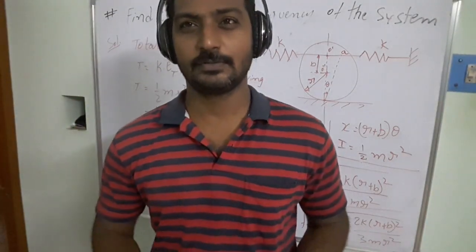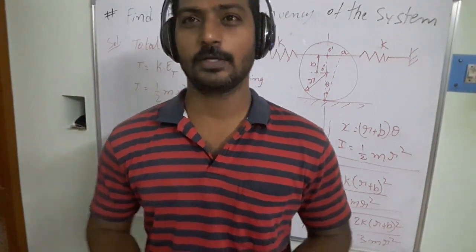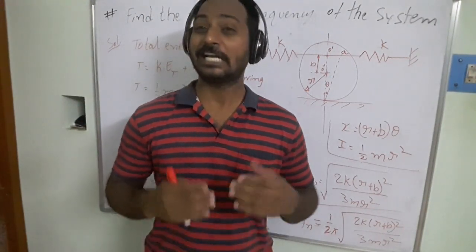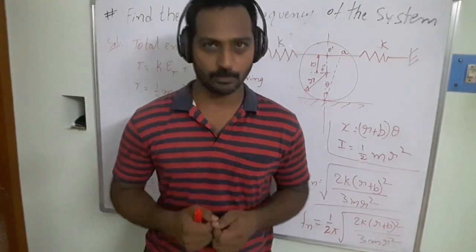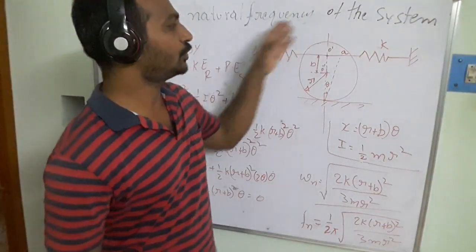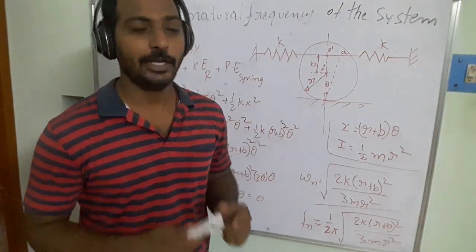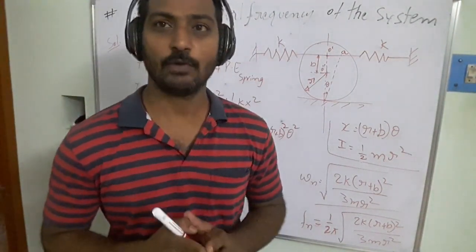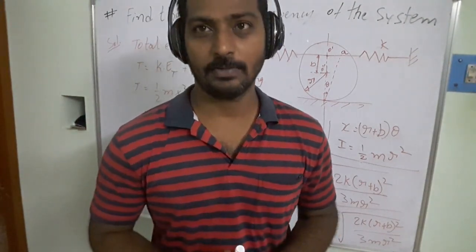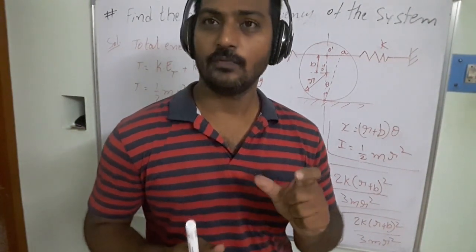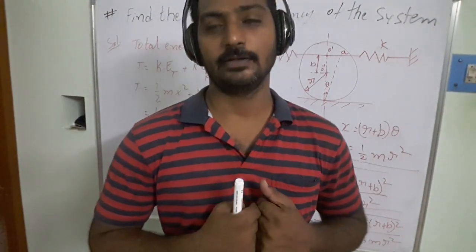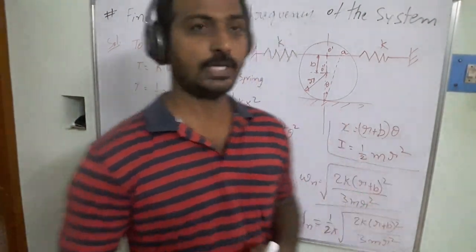Welcome back to video lectures. We are going to solve one more problem on longitudinal vibration where the mass of the system consists of translatory motion as well as rotary motion. The problem is to find the natural frequency of the system shown in this figure. We need to calculate the natural frequency — in mechanical vibrations, most of the time we calculate the free natural frequency, because we need to find the resonance point between the exciting frequency and the natural frequency of the system.